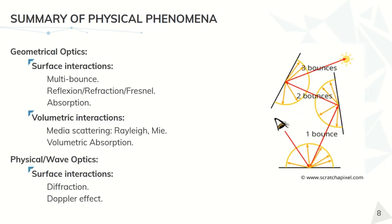In summary, we can find two different categories of physical phenomena. In the geometrical optics regime, we consider our electromagnetic radiation as a set of rays. Apart from the reflection, refraction, Fresnel effects and absorption, we need to consider all the multiple bounces that the ray can make before coming back to the detector.